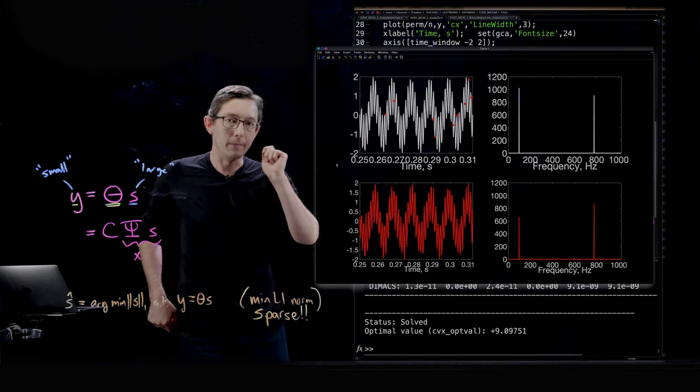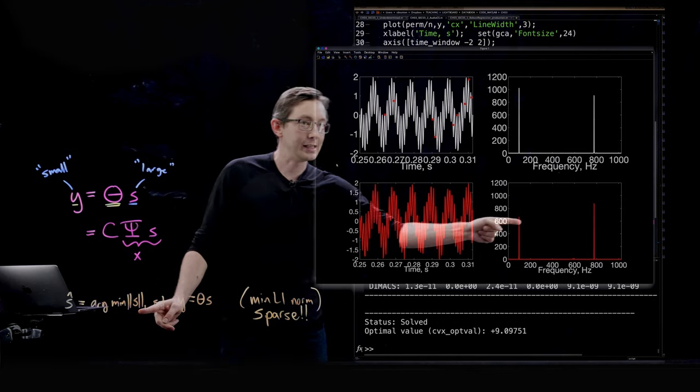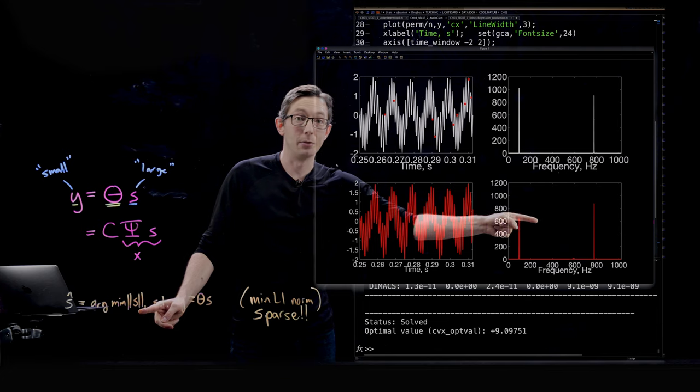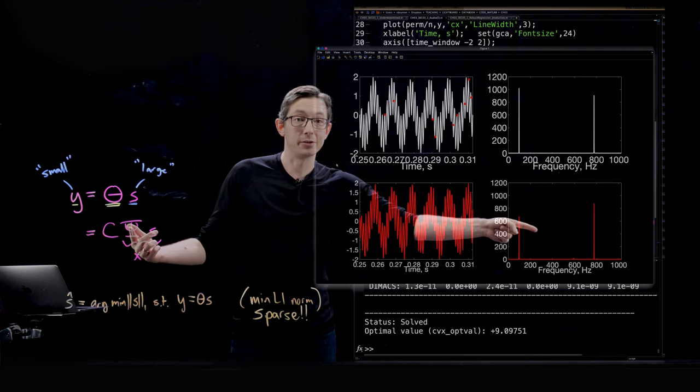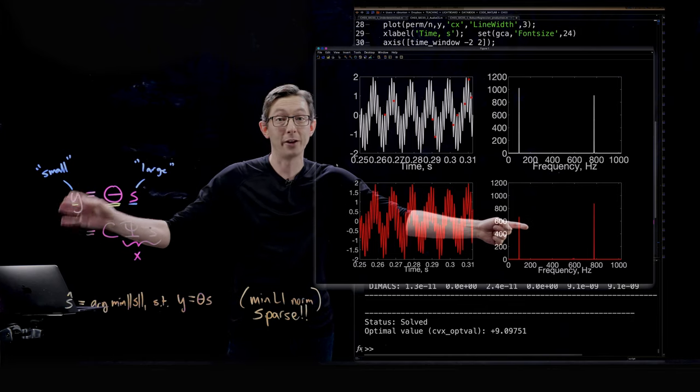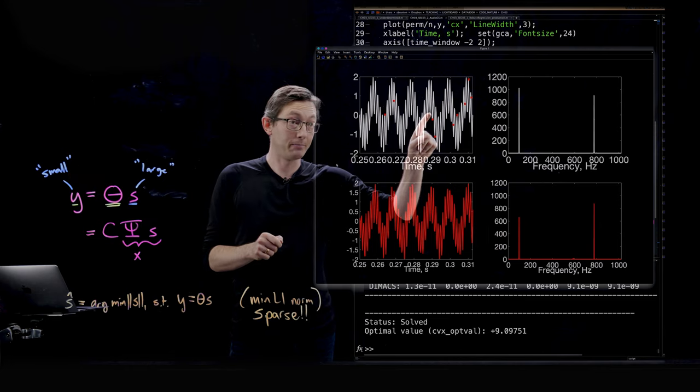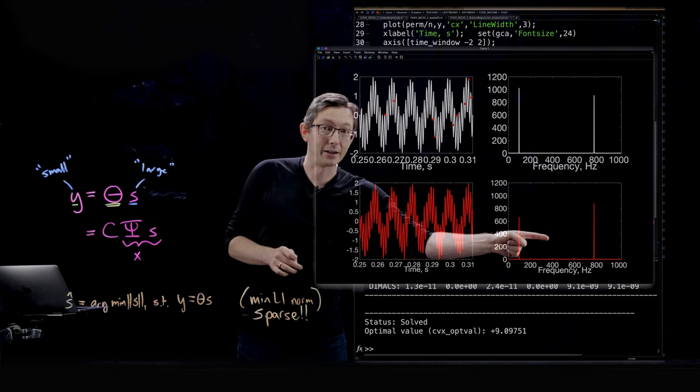And now I'm going to add the compressed sensing results. So from that L1 solution S this is the sparse S vector that was solved for by this matching pursuit algorithm. So this is the sparse solution to the system of equations that are consistent with those 128 random measurements in time that I took up here. I get this sparse vector.